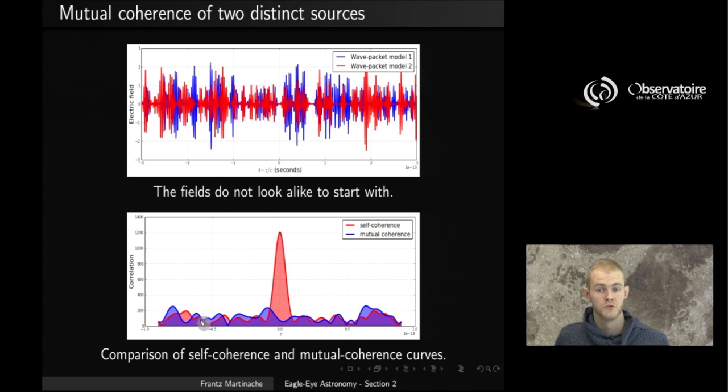If you want to quantify this, we are going to compute the actual self-coherence and mutual coherence curves. And the red curve that you have here, you may recognize it because it corresponded to the self-coherence function we saw earlier. That is the coherence between one signal and itself delayed in time. The blue curve in comparison corresponds to the mutual coherence function between two different electric fields coming from two different distinct sources. And you see that that mutual coherence function never gets significantly higher than, well, it's very close to zero.